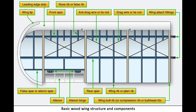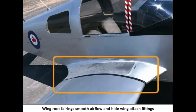Drag and anti-drag wires may also be found in a wing. They are crisscrossed between the spars to form a truss resisting forces acting on the wing in the direction of the wing chord. These tension wires are also referred to as tie rods. The wire designed to resist backward forces is called a drag wire; the anti-drag wire resists the forward forces in the chord direction. At the inboard end of the wing spars is some form of wing attach fitting, providing a strong and secure method for attaching the wing to the fuselage.